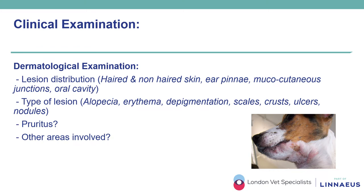The presence of pruritus can also help discriminate between conditions such as dermatophytosis, where typically pruritus is not reported, or ectoparasitic diseases such as sarcoptic mange, or allergic diseases such as atopic dermatitis, where patients are pruritic. It is however important to highlight that the discrimination between pruritic and non-pruritic chronic conditions can be arbitrary. The involvement of other areas can also lead to identifying the possibility of conditions with a more generalized distribution.